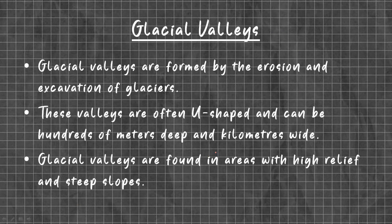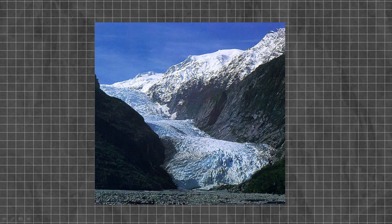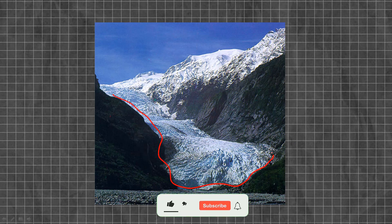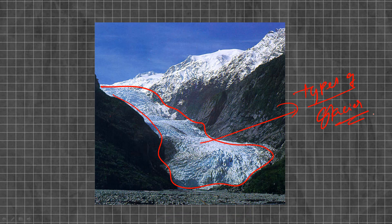Glacial valleys are formed by erosion and excavation of glaciers. These valleys are often U-shaped and can be hundreds of meters in depth and kilometers wide. Glacial valleys are found in areas with high relief and steep slopes. Here is a glacial valley filled with glaciers. In a previous video, we have talked about the types of glaciers — please do check out that video, and I will be providing the link. This is the glacial valley.